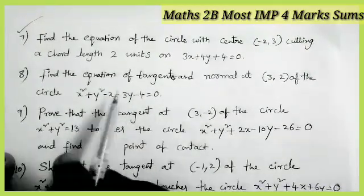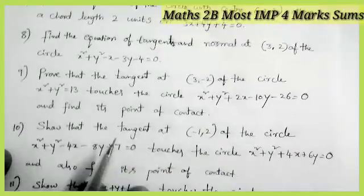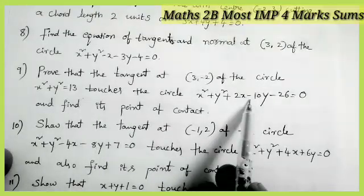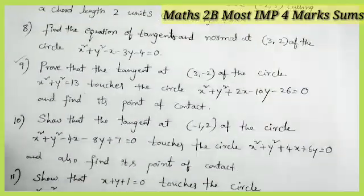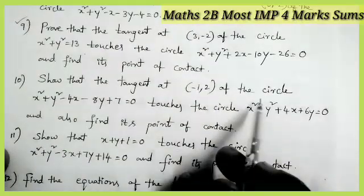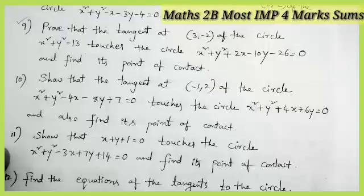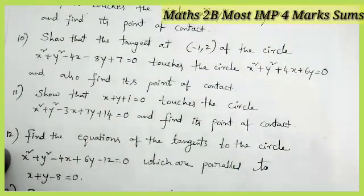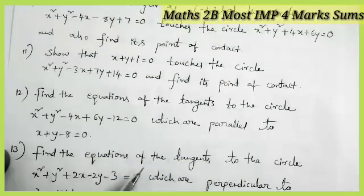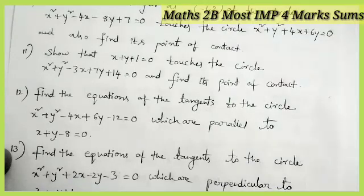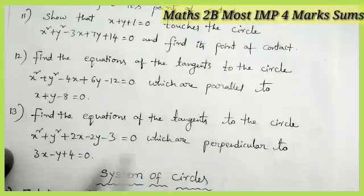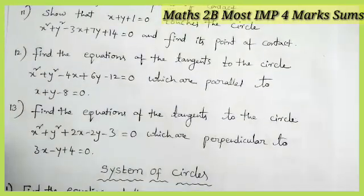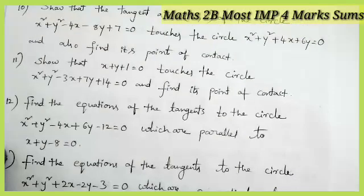Find the equations of the tangent and normal at the given point to the circle. Prove that the tangent at (3, minus 2) to the first circle also touches the second circle, and find the point of contact — most important model. Show that the line touches the circle and find its point of contact — most important model. Find the equations of tangents to the circle which are parallel to the given line. Find the equation of the tangent to the circle which is perpendicular to the given line. These are the most frequently repeating important questions — the four-mark questions from the topic circles.